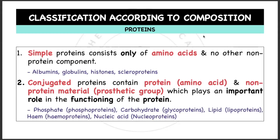Classification according to composition: simple proteins consist only of amino acids and no other non-protein component. Examples would be albumins, globulins, histones, and scleroproteins. Albumins are found in the egg and also serum albumin in the blood. Globulins are antibodies, histones are associated with DNA, and scleroproteins such as keratin.